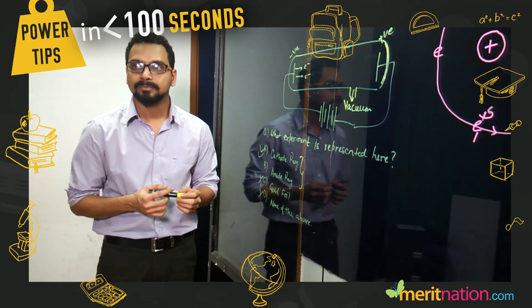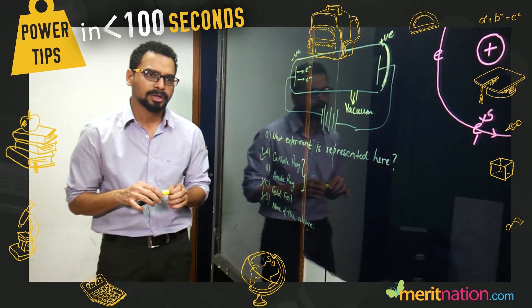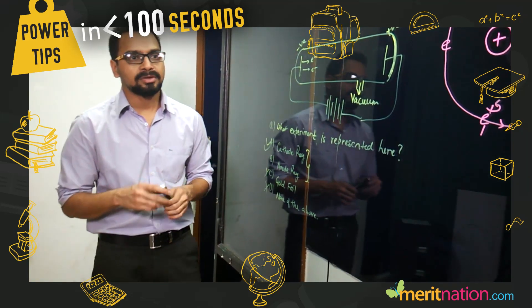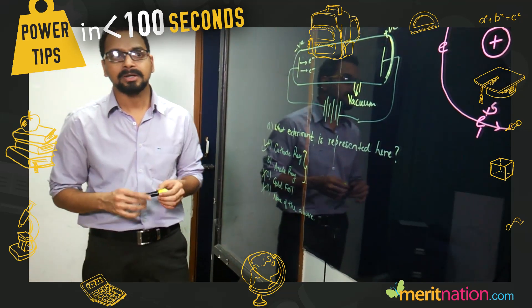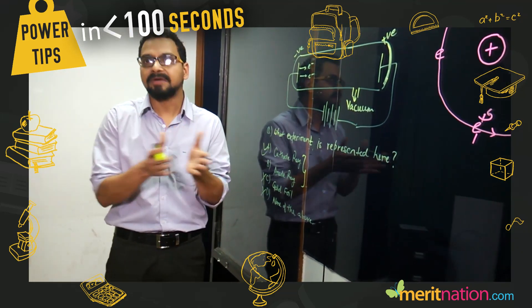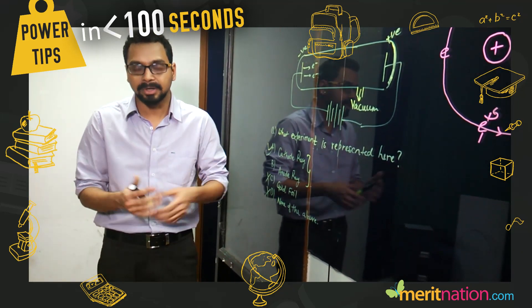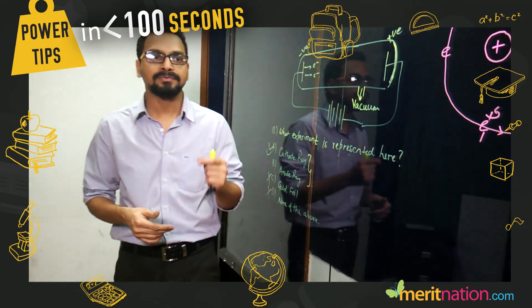What kind of questions do we get in the periodic table chapter in our board examination? Periodic table is actually a very big chapter and covers a lot of different topics. Typically, if one has to look at the bifurcation of the chapter in terms of questions that appear, they can be divided first of all into identification of the elements.